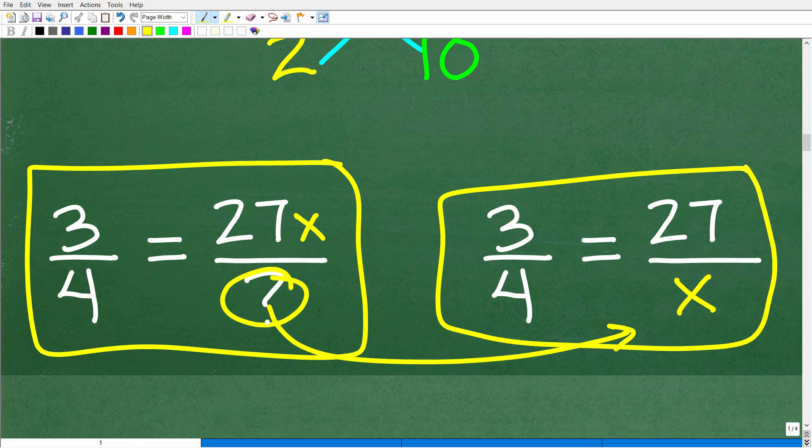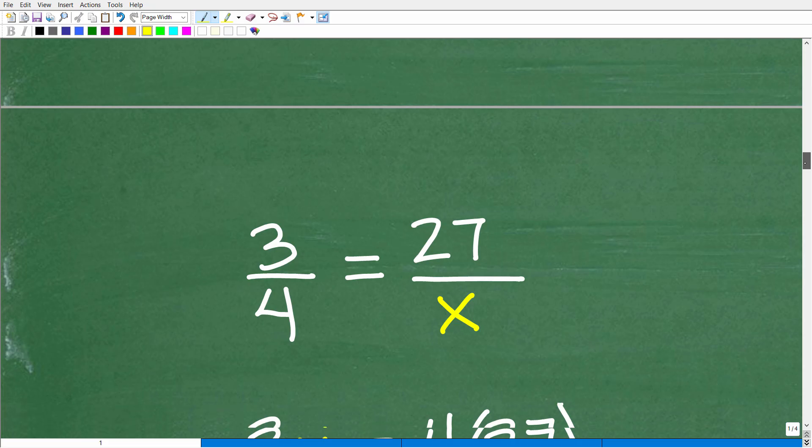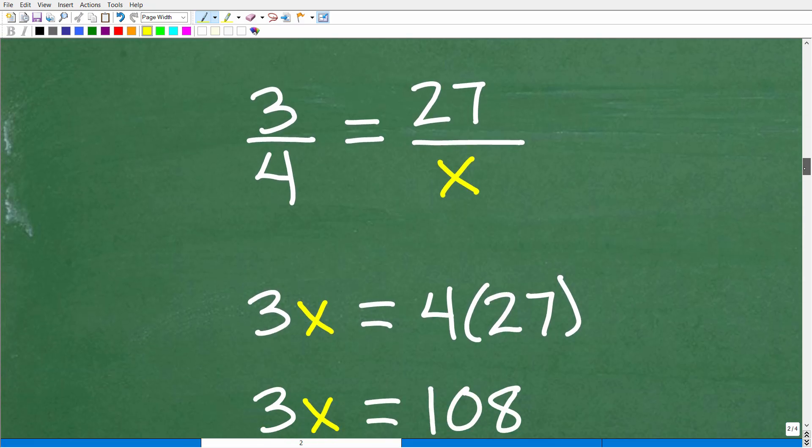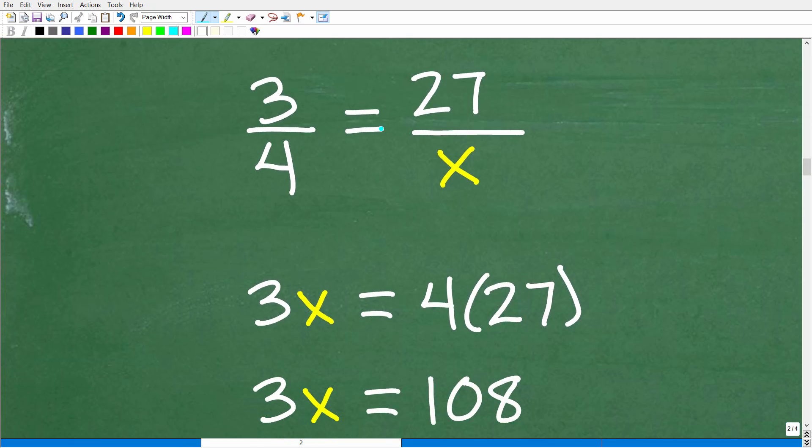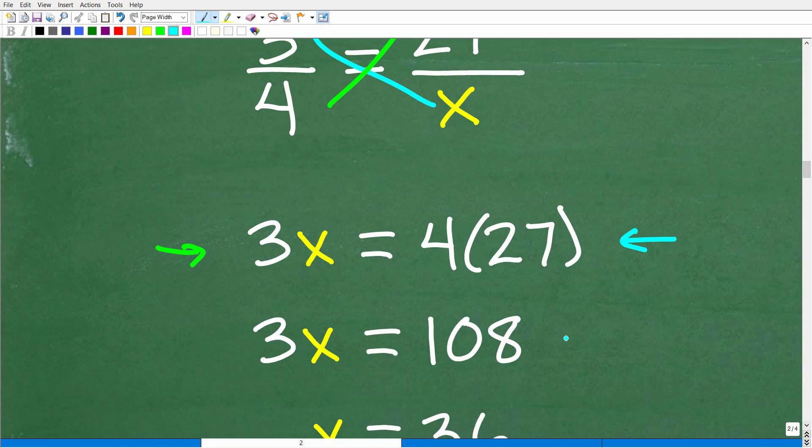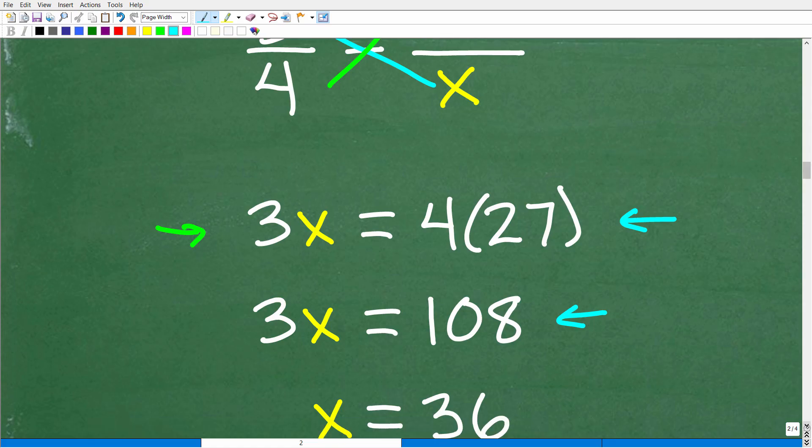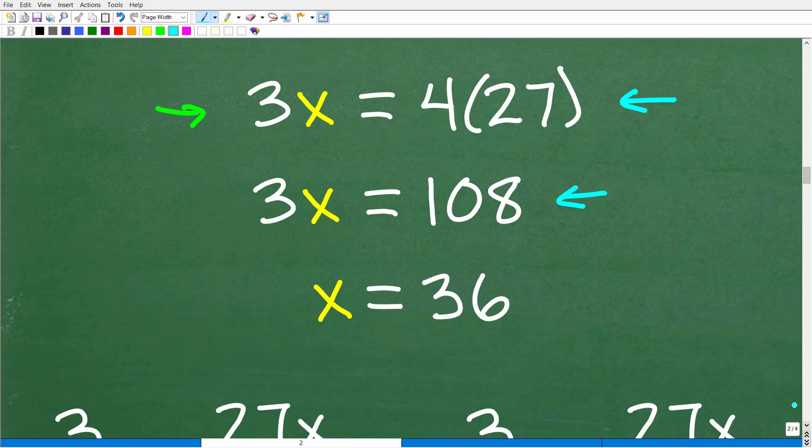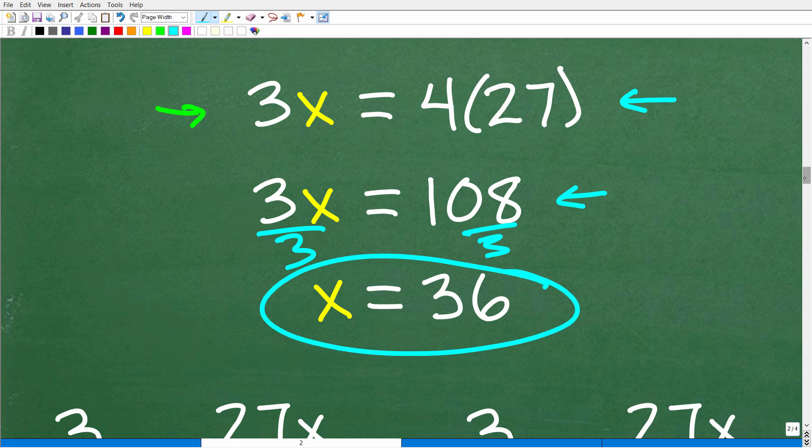We have 3 fourths equal to 27 over x, so we can use the cross-product to solve for the denominator. 3 times x is 3x, and 4 times 27 is 108. So we have to solve this algebraic equation: 3x equals 108. To solve for x, divide both sides by 3. 108 divided by 3 is 36.